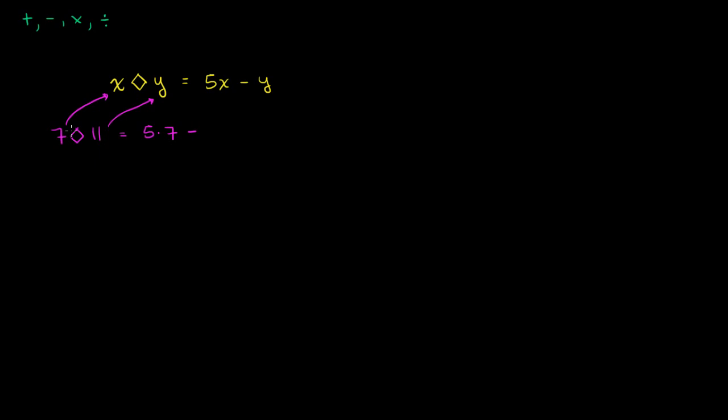So you have minus 11 over here. This 7 is this 7, and this 11 is this 11 right over here. And then we just evaluate that. So 5 times 7 is 35. So this is equal to 35 minus 11, which is equal to 24.